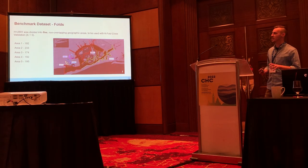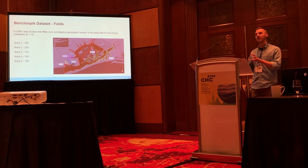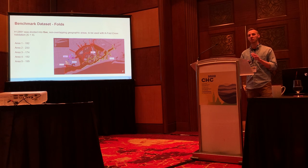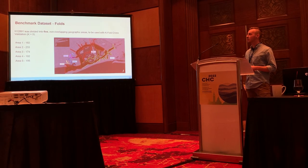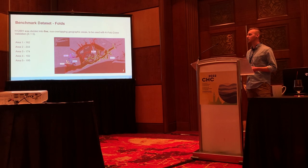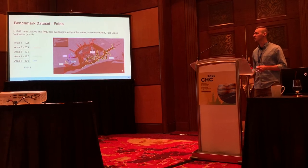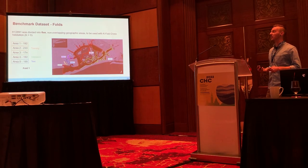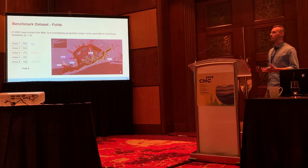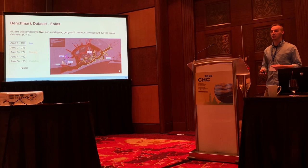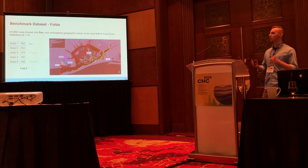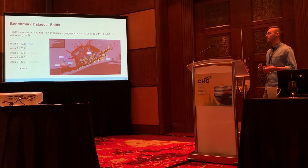We also performed spatial cross-validation, a machine learning technique used to help reduce model bias. We took our survey and divided it into five distinct, non-overlapping geographical areas, where each area has roughly 200 or so objects. For each of five folds, we use three areas as training data, one as validation, and one as testing — cycling through every single combination, then taking the results from all test sets and averaging them together to get the final scores.